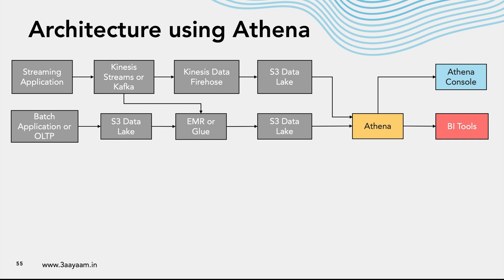From the batch or OLTP application, we get the data using CDC tools like AWS DMS (Database Migration Service) or open-source tools like Debezium. Debezium sends it to Kafka, but eventually it lands on S3. As the data is coming from batch applications or OLTP data sources, we need to do some aggregation, processing, or transformation, which is done by Glue.